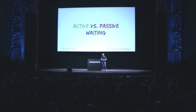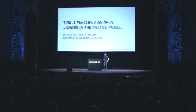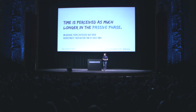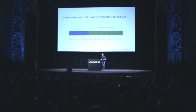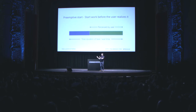Now: active versus passive waiting. Time is perceived as much longer in the passive phase. On average, people in passive wait mode overestimate their waiting time by about 36 percent. One way to improve perception is to shorten the passive phase and lengthen the active phase. The first pattern is called preemptive start — start work before the user realizes it, so only the remaining part is perceived by the user. The next method is called early completion — show stuff before all of it is ready.